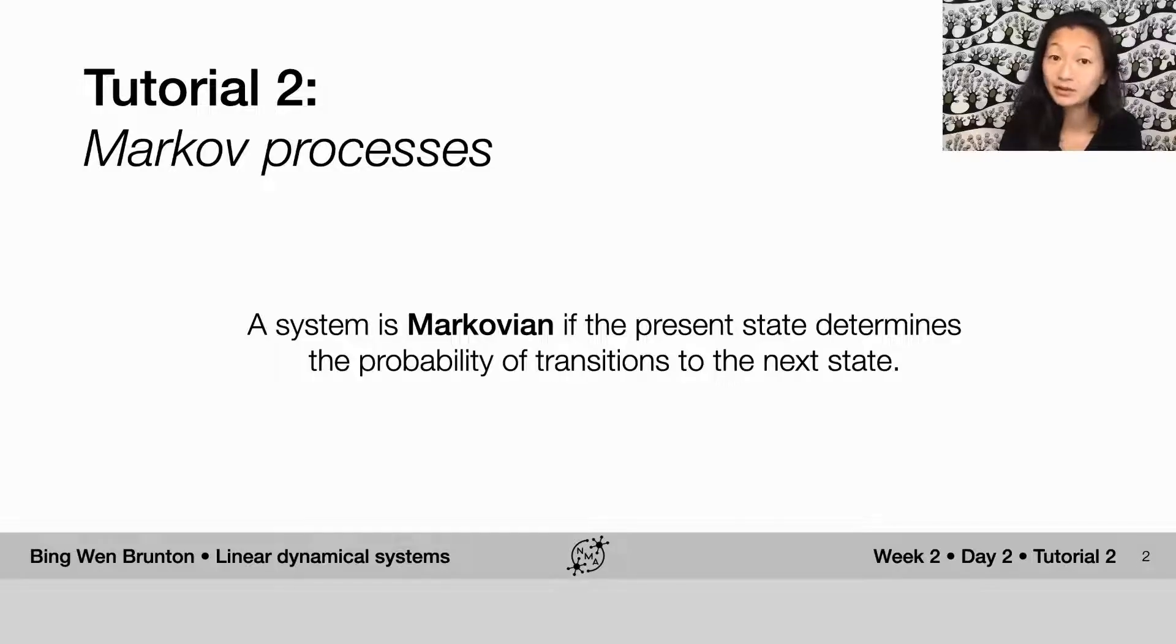So I'm going to unpack this a little bit. The present state is all you need to determine the probability of transitions to the next state. That means you're not dependent on a long time history. You don't care about where you were a long time ago or even a moment ago. You only care about the present state.